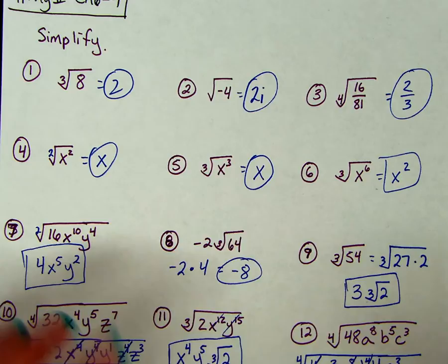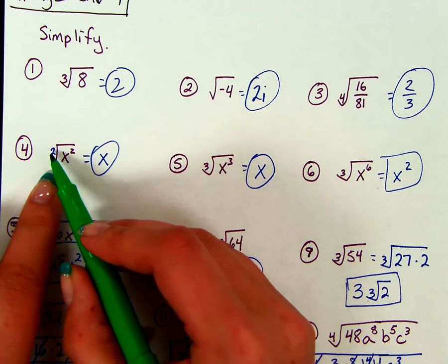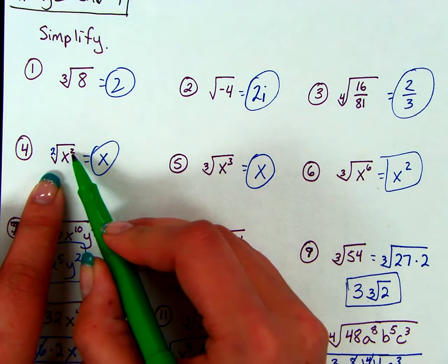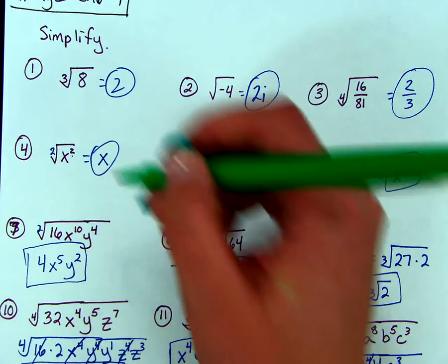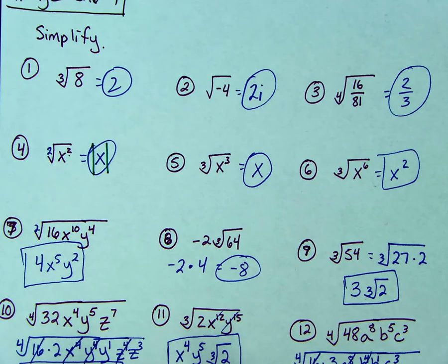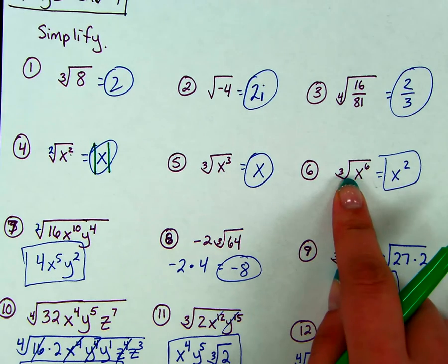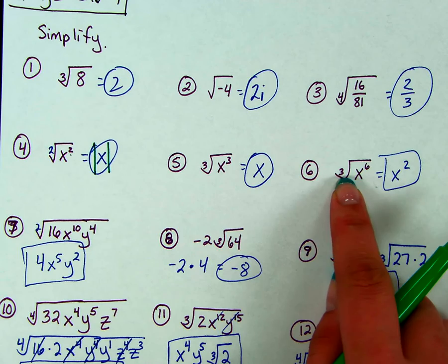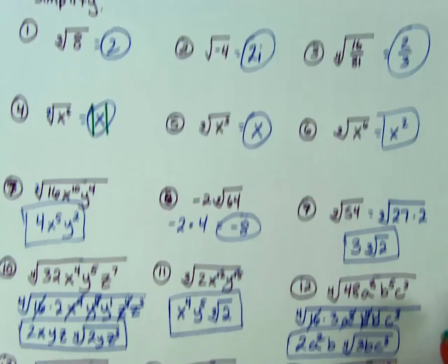Alright, so my first variable is here. I have even, even, and even though we're not writing it, there's a 1, which makes it an odd. So this needs to have an absolute value symbol around it. This one I don't need to check, because we're starting with an odd root, so the rule isn't going to apply.